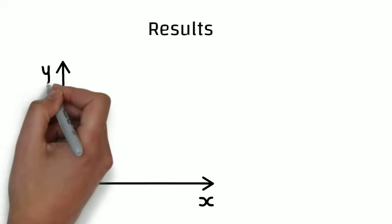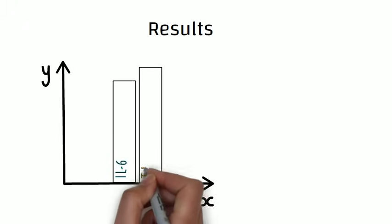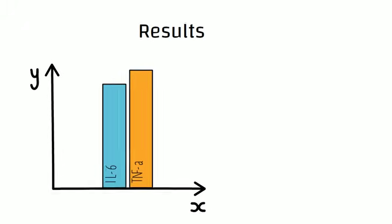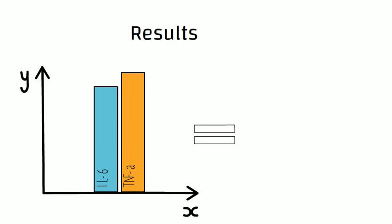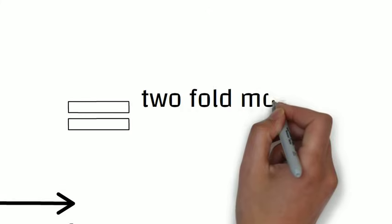They found that those with higher levels of the two cytokines, interleukin-6 and TNF-alpha, were also two-fold more likely to die.